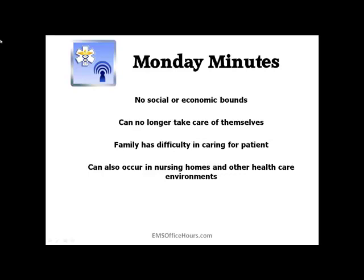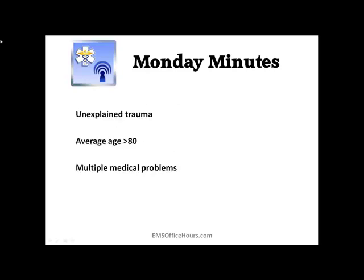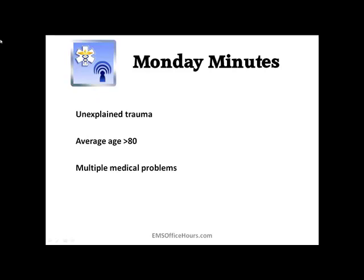So what are some things you can look for? Look for some obvious things. Unexplained trauma is usually the primary presentation. The average abused patient is usually older than 80 years old and might have multiple medical problems — things like cancer, congestive heart failure, heart disease, maybe even incontinence, and possibly dementia. One thing to know is that it can be hard to determine whether that dementia is a chronic issue or acute, especially if there's unexplained trauma with a likelihood of head trauma from abuse.